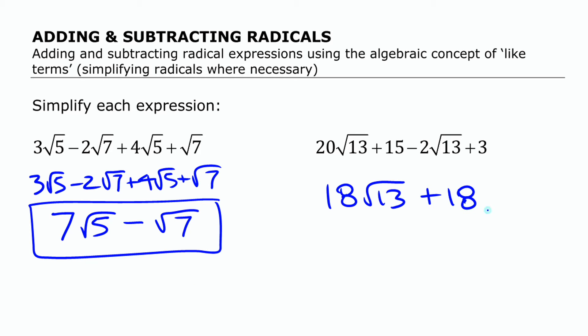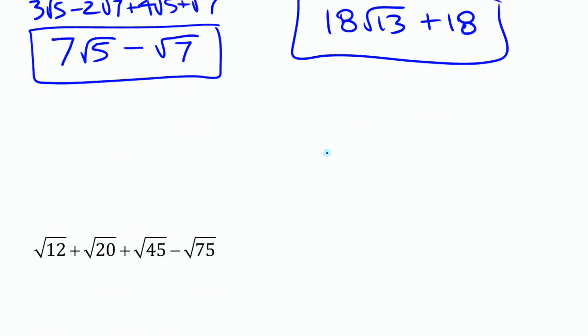Again, this is as simple as this can get. You can't combine those together in any way because they're two different numbers, just like if you had 18x plus 18, you can't combine those together because they're different types of terms. That's as simple as it can get.